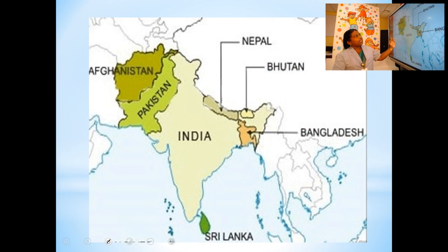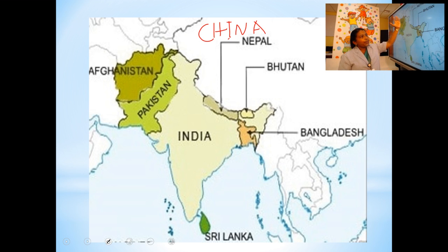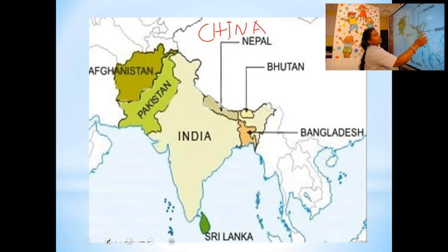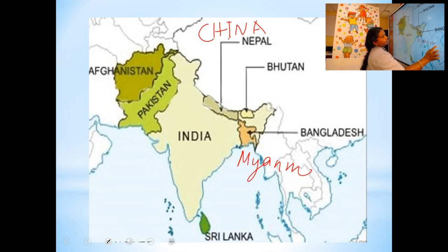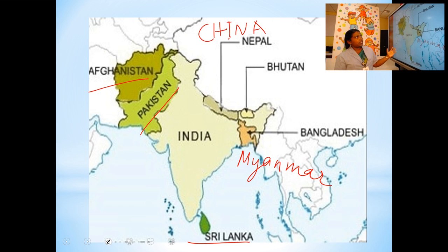Now let's study about the neighboring countries of India. In the northern part, we have China, Nepal, and Bhutan. In the northeastern part, we have Bangladesh and Myanmar. Then in the western side, we have Afghanistan and Pakistan. And in the south, we have Sri Lanka. These are our neighboring countries.